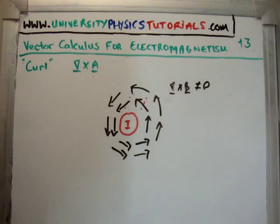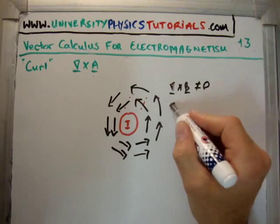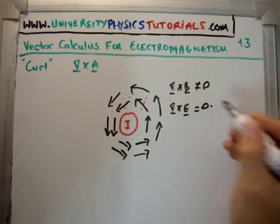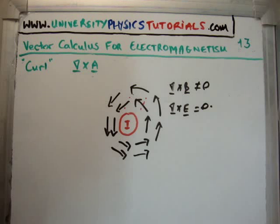So we will say that the curl of our magnetic field is non-zero. And I can tell you that the curl of a static electric field is zero, but that is a static electric field, it is not the case for an electrodynamic field or electrodynamics.